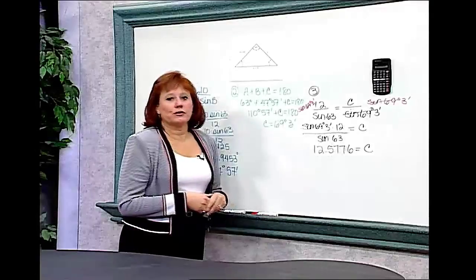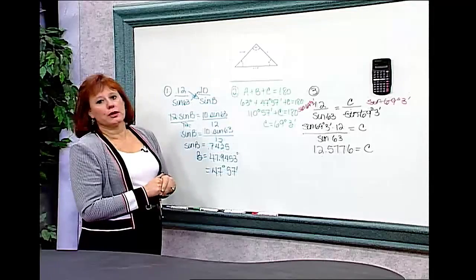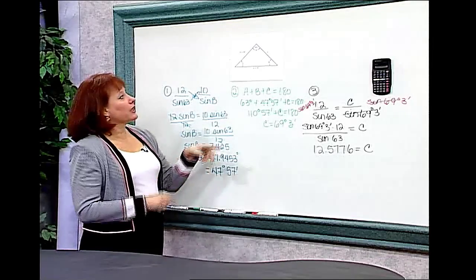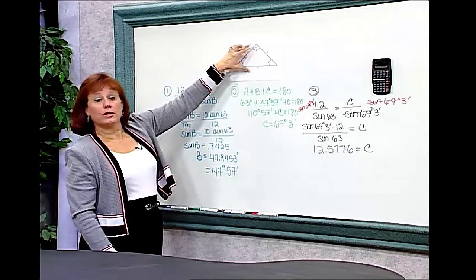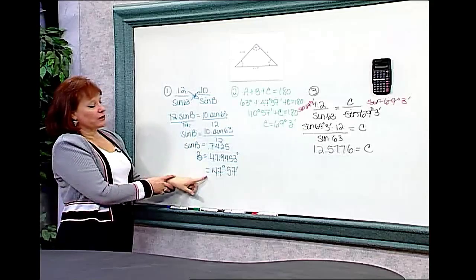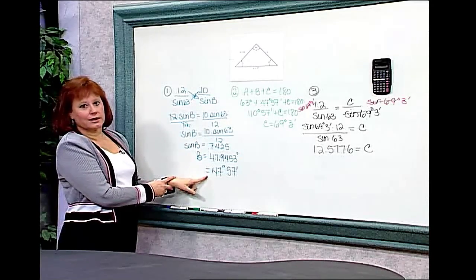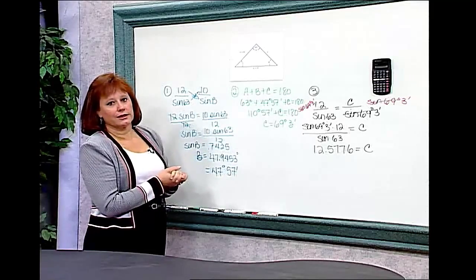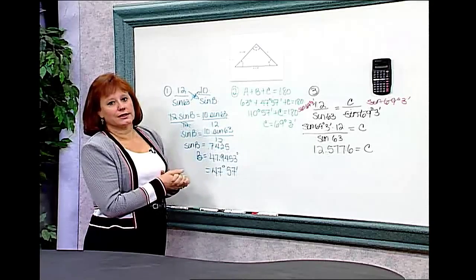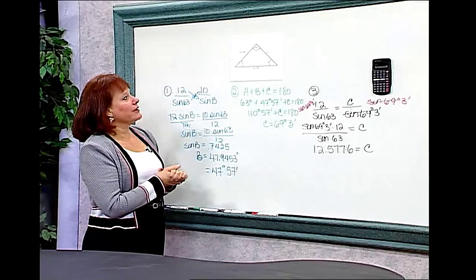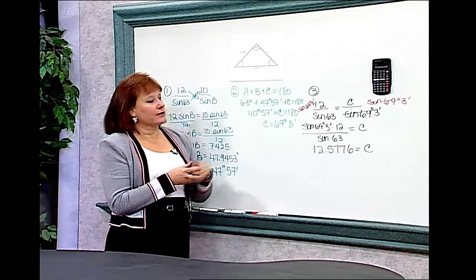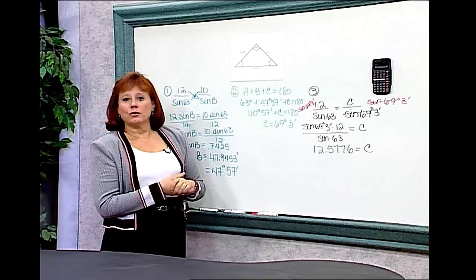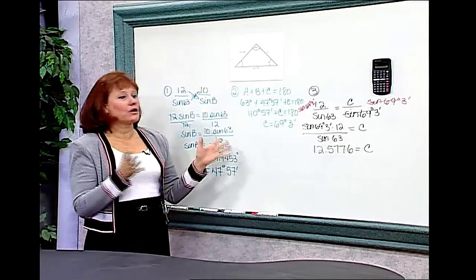To review: we started with a triangle where two sides and an angle were known. Confirming we knew an angle and its opposite side, we used the Law of Sines to find angle B (47° 57'). Then, using the 180-degree rule, we found angle C (69° 3'). Finally, applying the Law of Sines again, we found side C equals 12.5776. Using triangle properties alongside the Law of Sines and Law of Cosines lets you solve for all missing parts.